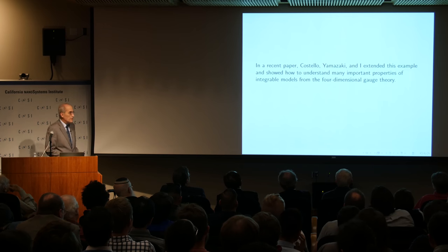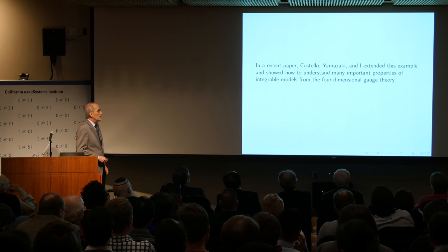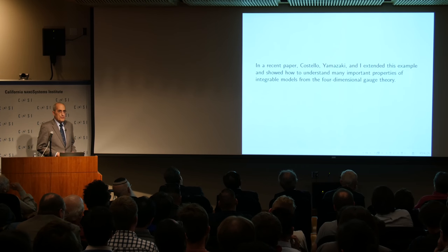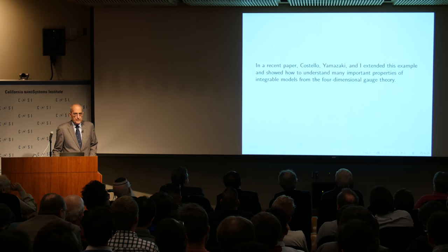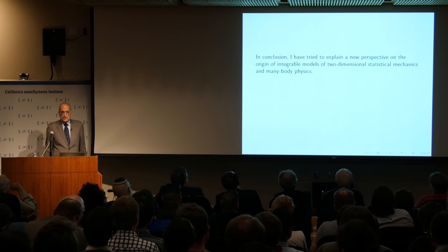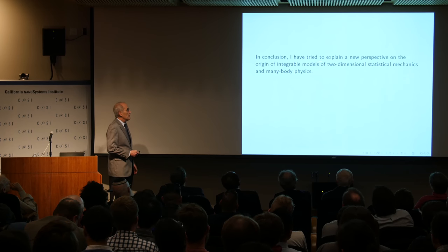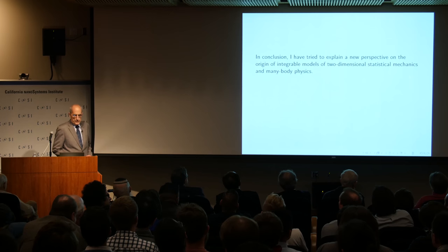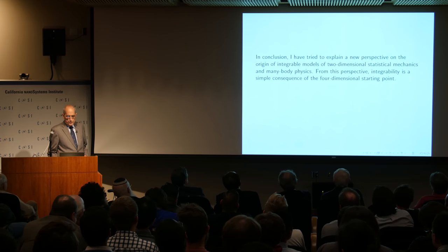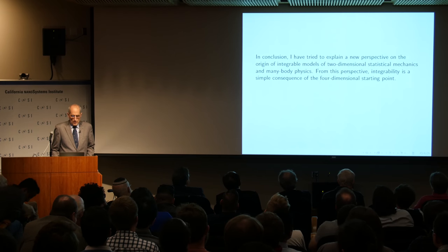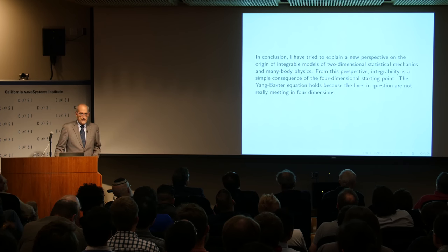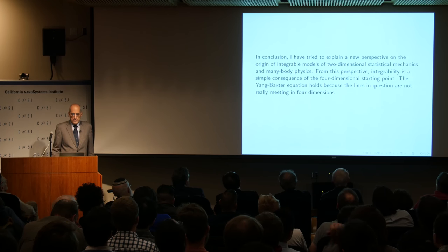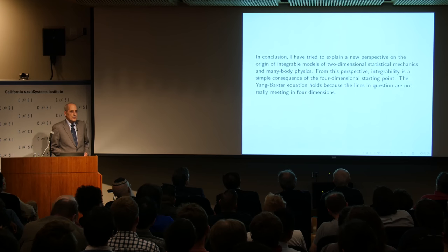In a recent paper, Costello, Yamazaki, and I extended this example to show how many important properties of integrable models follow from the four-dimensional gauge theory. In conclusion, I've tried to explain a new perspective on the origin of integrable models of two-dimensional statistical mechanics and many-body physics. From this perspective, integrability is a simple consequence of the four-dimensional starting point. The Yang-Baxter equation holds because the lines in question are not really meeting in four dimensions. Thirty years ago, Michael Atiyah actually had the vision that something like this ought to be the explanation of Yang-Baxter, and my assessment is that Costello finally found it. Thank you.